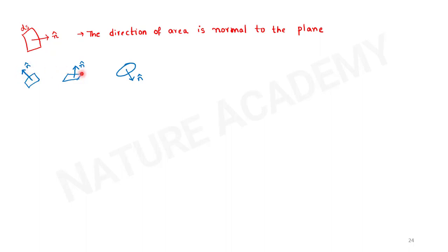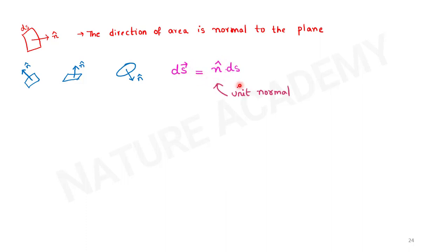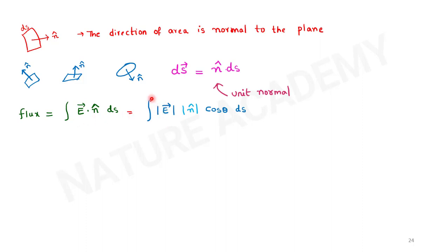The area element dS-bar equals dS times n-cap, where n-cap is the unit normal. Flux equals the integral of E-bar dot n-cap dS. Since it is a dot product, flux equals the integral of |E| cos theta dS. When theta equals zero (electric field and area normal in the same direction), flux is maximum. When E-bar and the area normal are perpendicular (theta = 90°), flux through that area is zero. For a closed surface we always consider the outward normal.